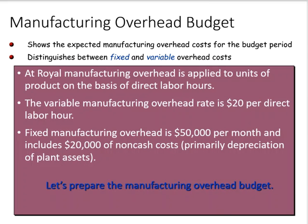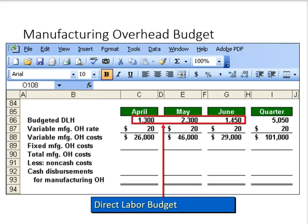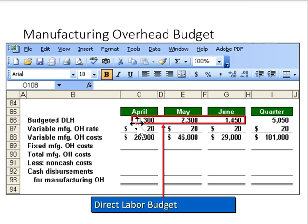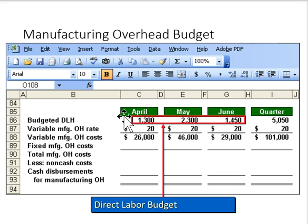So if we're talking about a budget, we will have to back out those non-cash expenses. We start right here with the direct labor budget — the budgeted direct labor hours for April, May, and June — and the variable manufacturing overhead rate is $20 per direct labor hour.